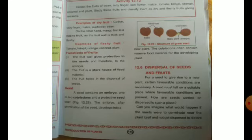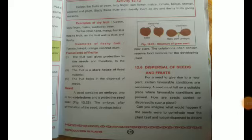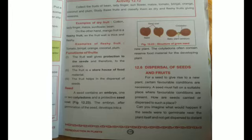If you observe further, you will see that a seed contains an embryo, and it also has two cotyledons and a seed coat. Now, what is a cotyledon? Take a gram seed — a chickpea — from your home.